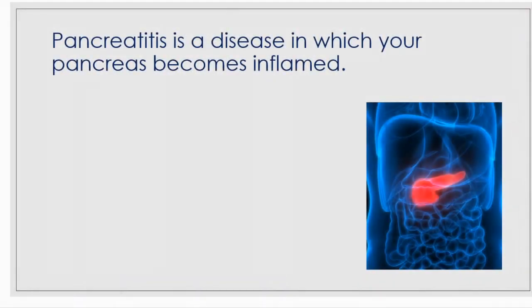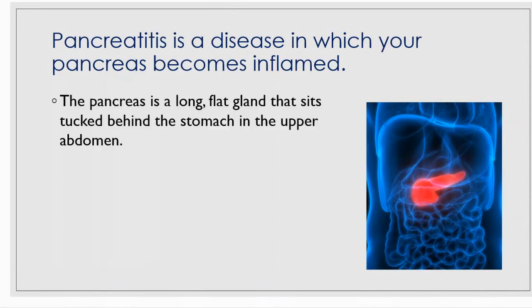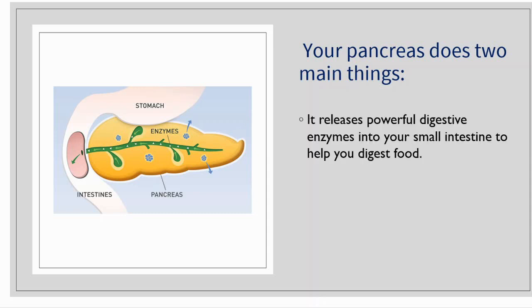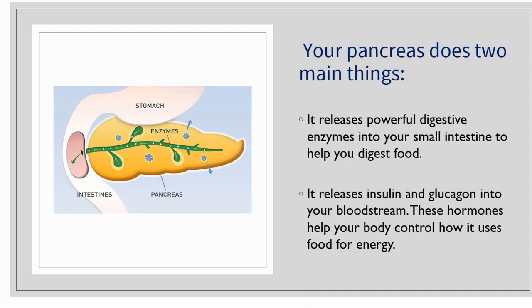Pancreatitis is a disease in which your pancreas becomes inflamed. The pancreas is a long flat gland that sits tucked behind the stomach in the upper abdomen. Your pancreas does two main things: it releases powerful digestive enzymes into your small intestine to help you digest food, and it releases insulin and glucagon into your bloodstream. These hormones help your body control how it uses food for energy.